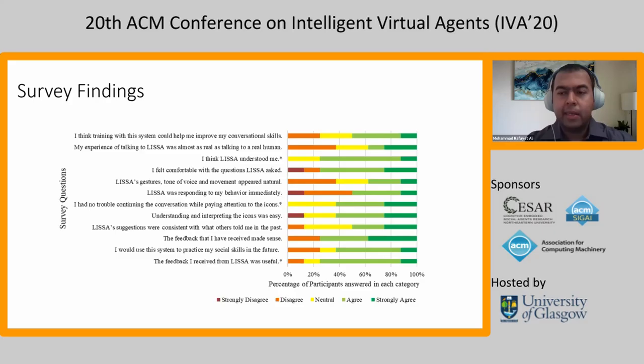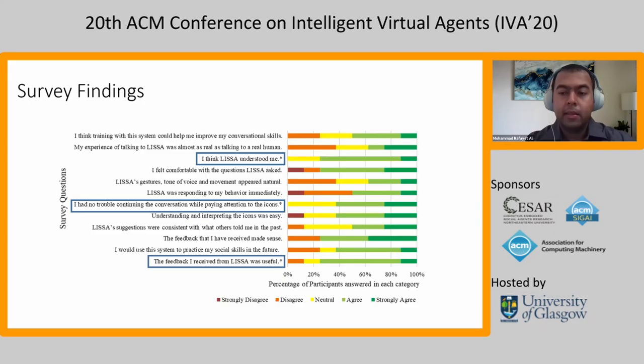In the survey, we presented a statement and asked the participants to rate on a scale from strongly agree to strongly disagree. Significantly more participants said that Lisa was understanding, that they could pay attention to the icons while having the conversation, and that the feedback was useful.